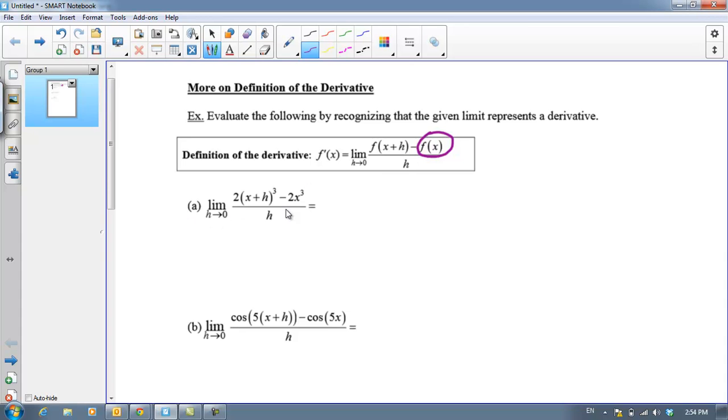So right here in (a), we can tell that the function that we want to find the derivative of, or f of x, is 2x cubed. Now it's not negative 2x cubed, f of x is after the minus sign. So the minus sign is not part of the function. So doing this process is going to find f prime of x for us.